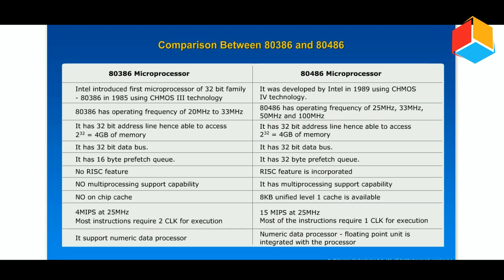The 80386 microprocessor has a 32-bit address line, hence able to access 2 to the power 32, equal to 4GB of memory. The 80486 also has a 32-bit address line, hence able to access 2 to the power 32, equal to 4GB of memory.